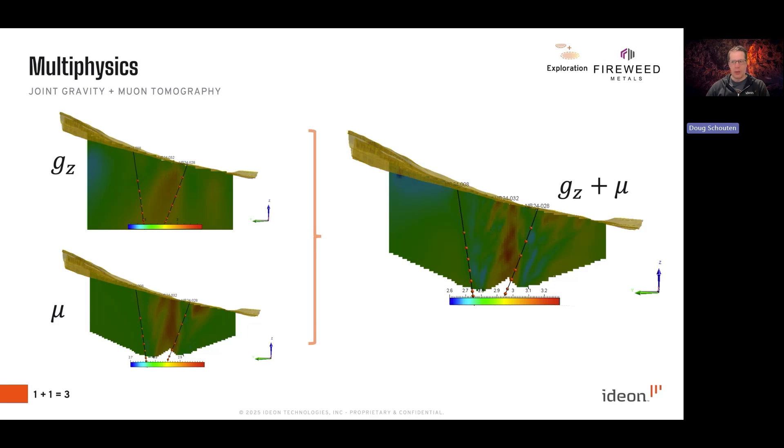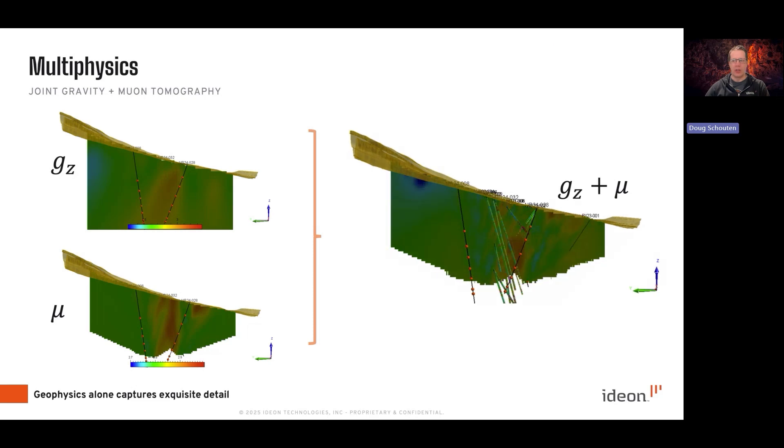More detail than either by themselves. However, if we overlay the drill data onto this joint inversion section, you can see how very subtle features are being picked out in the multi-physics analysis. Sliding that section from west to east shows just how much structural information can be pulled out from multi-physics, including very relevant untested drill targets for possible extensions to the ore body.